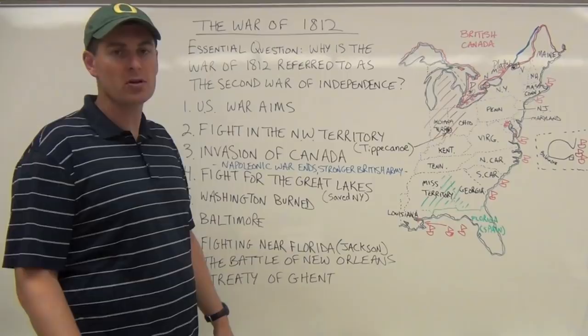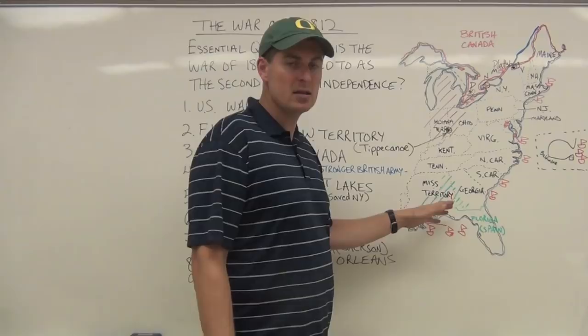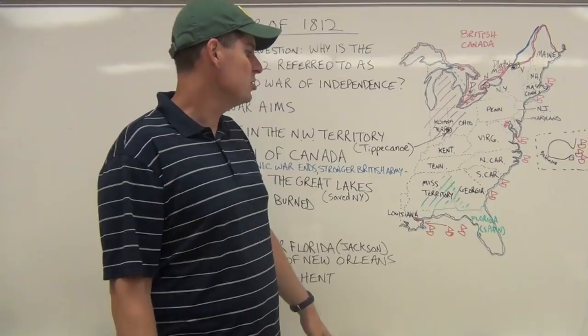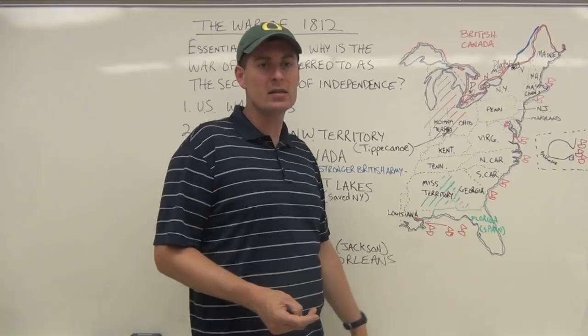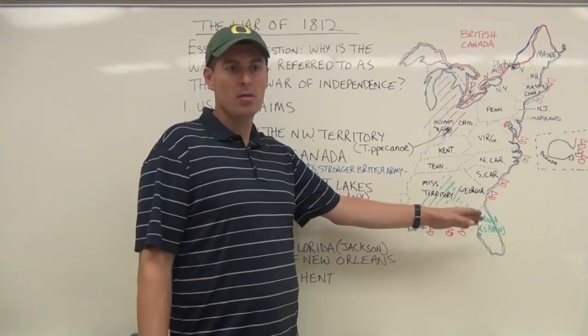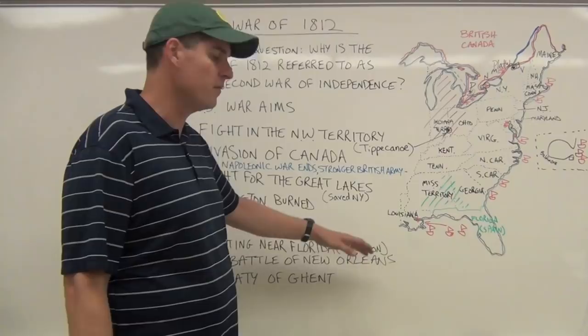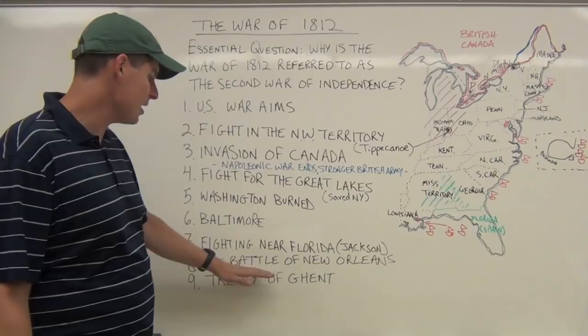The fight near Florida. As this is going on, the Creek Indians had been one of the major harassers of frontier people in the United States. General Andrew Jackson comes down and drops the hammer on the Creek Indians. He also goes into Florida and attacks Spanish citizens as punishment, which later demonstrates that Spain really can't hold onto Florida. The United States will purchase Florida a few years later. Jackson begins to build his fame as a general here, and he will cement it with the next event — the Battle of New Orleans.